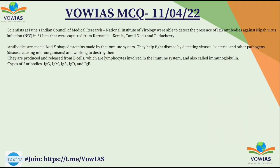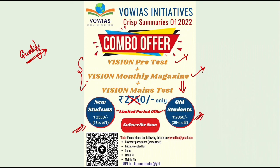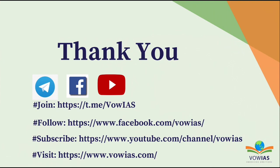This question was in the news because scientists at the Pune ICMR National Institute of Virology detected the presence of IgG antibodies against the Nipah virus in 51 bats captured from Karnataka, Kerala, Tamil Nadu, and Puducherry. These Y-shaped proteins made by the immune system help detect viruses, bacteria, and other pathogens. We are also providing Vision Prelims Test Series Summary, Vision Monthly Magazine Summary, and Vision Mains Test Series Summary at discounted prices. For queries, reach us via comments or Telegram. See you tomorrow with five more MCQs. Keep studying and stay tuned. Jai Hind!